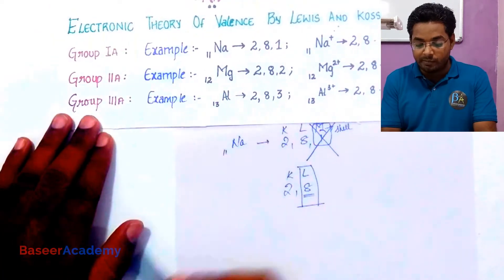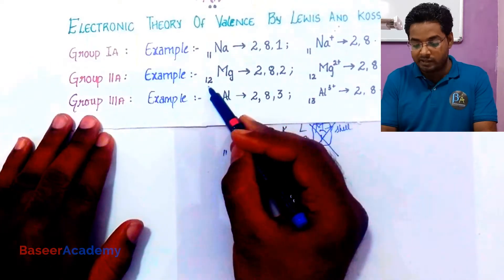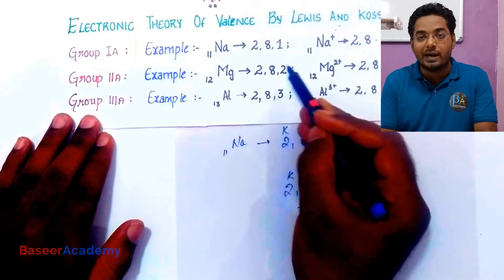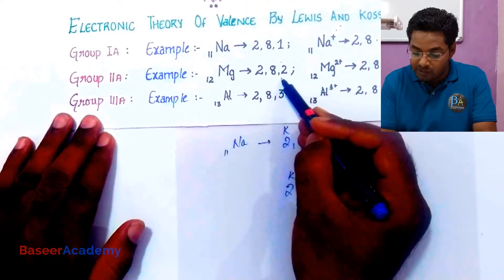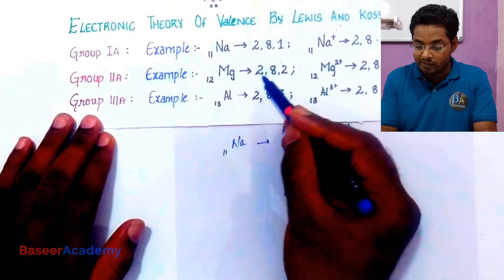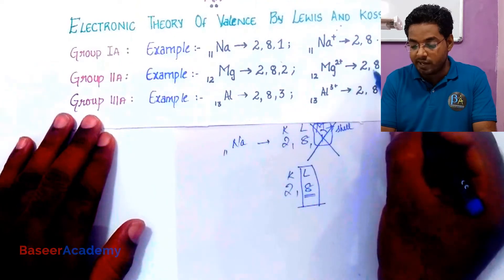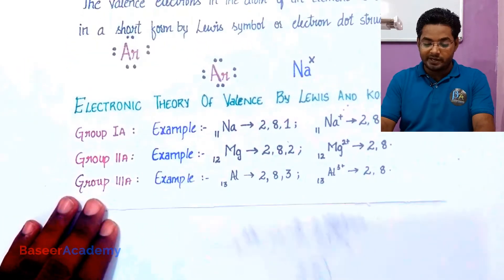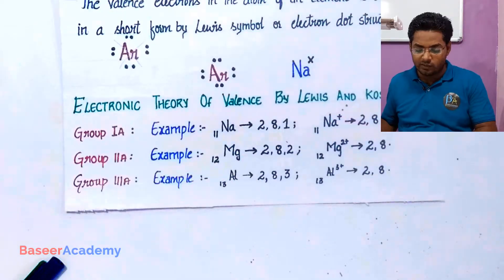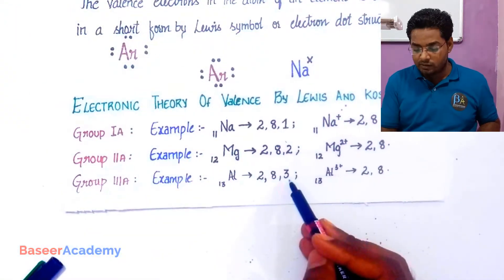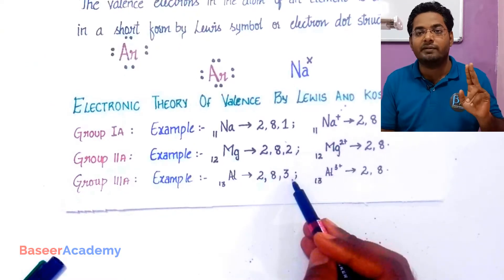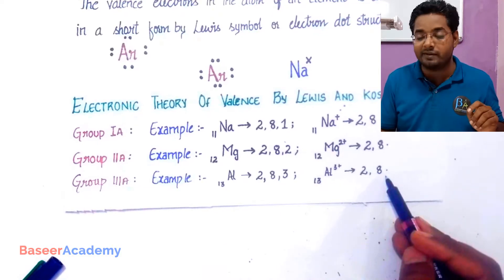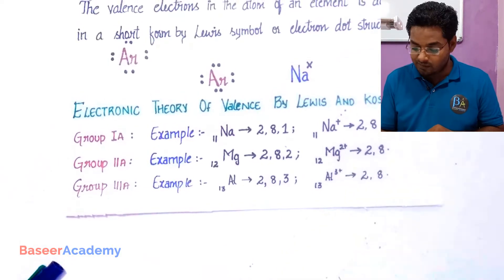Likewise, magnesium from group 2A has an atomic number of 12 and an electronic configuration of 2, 8, 2. It has two valence electrons. It tends to lose these two electrons so that the outermost orbit will have eight electrons. Group 3A elements likewise have three electrons in the outermost orbit and tend to lose those three valence electrons so that they are left with eight valence electrons.